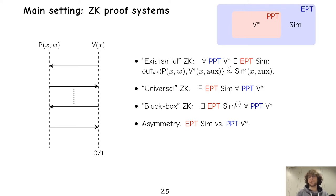You also run into composability issues because after replacing an adversary by a simulator once, you will now have an expected-time adversary which you cannot handle anymore, since we can only handle PPT adversaries. So there are two ways out: we could require the simulator to be PPT, or we could allow the adversary to be EPT — and we'll look at the latter.